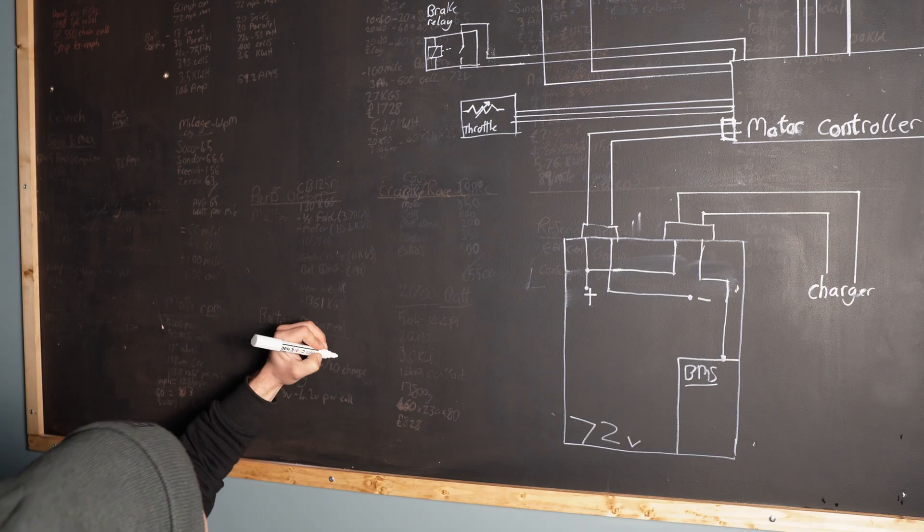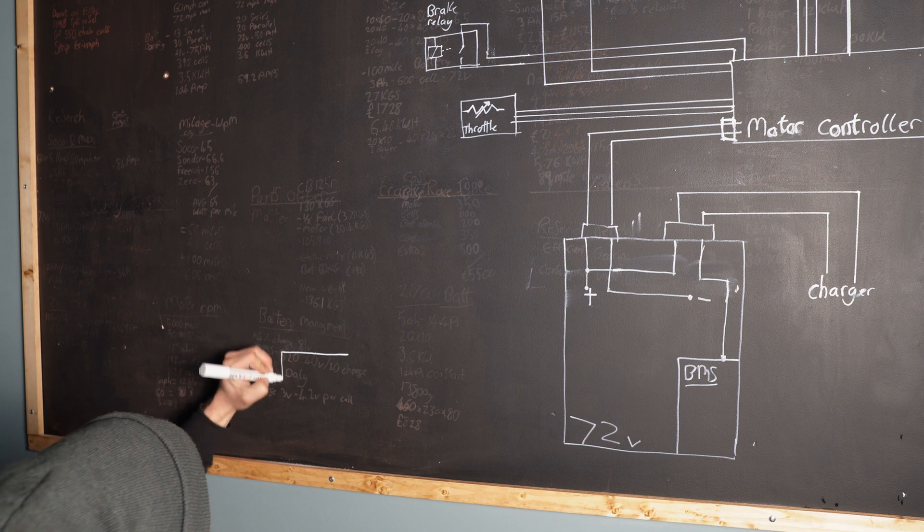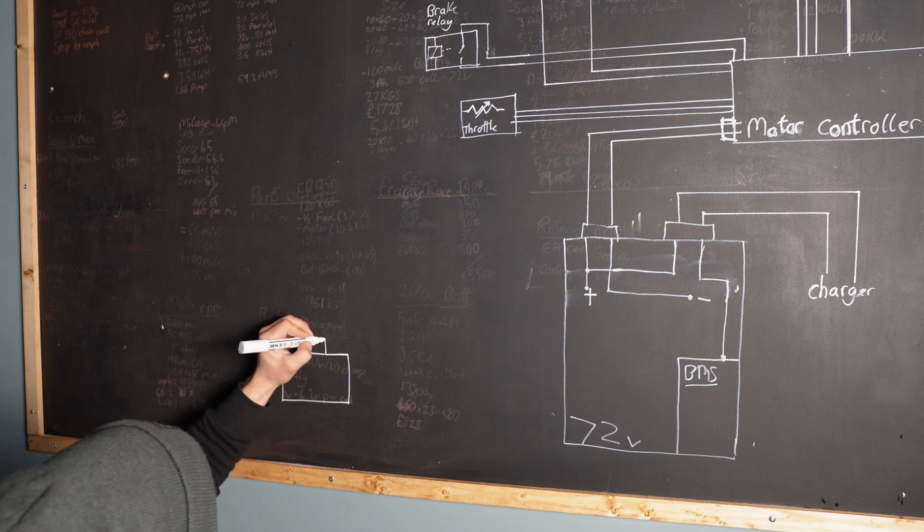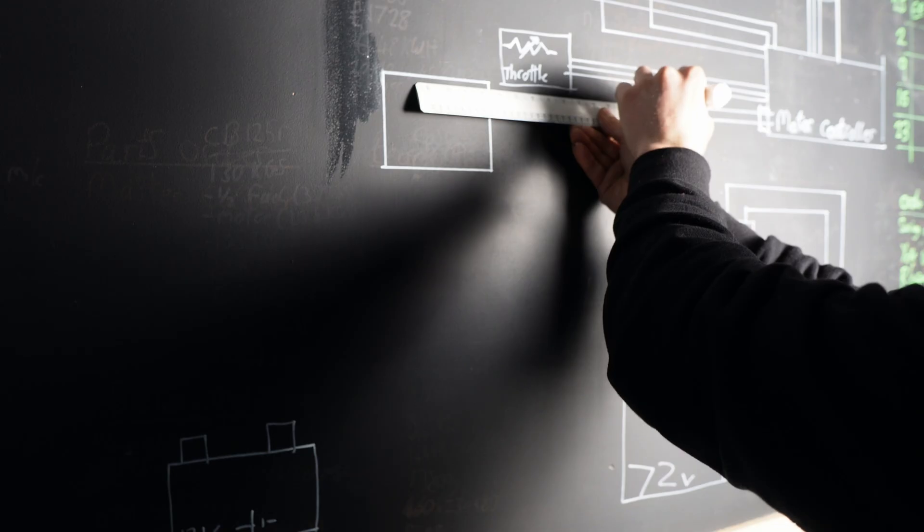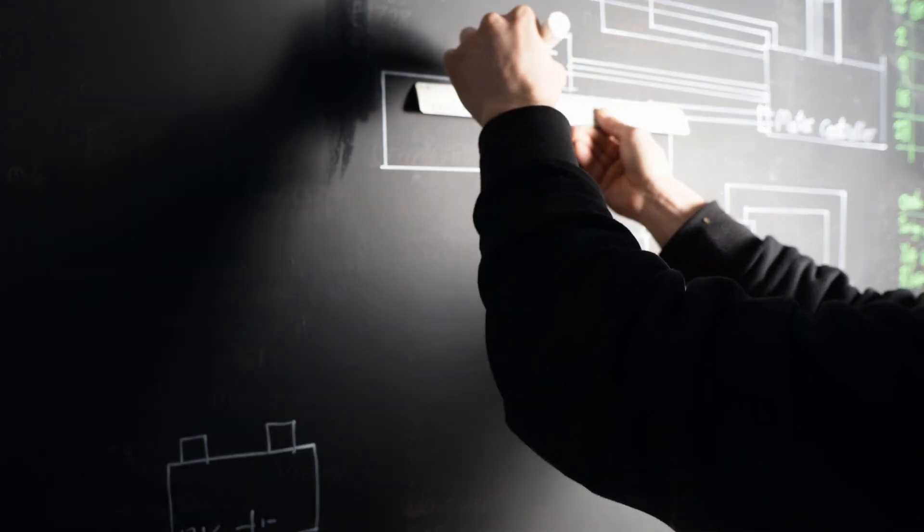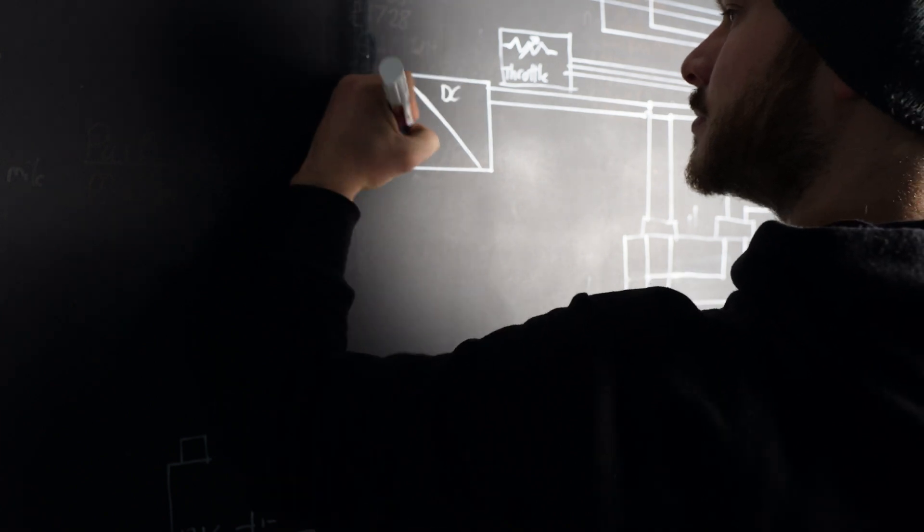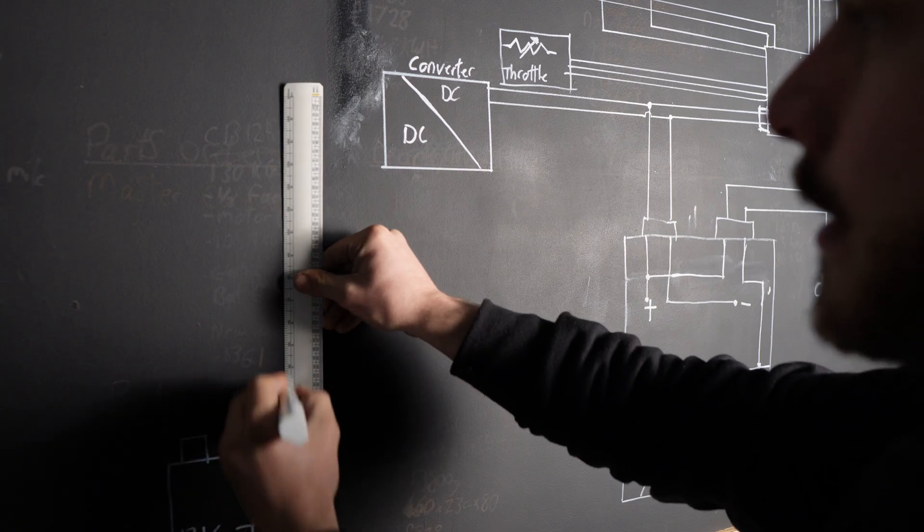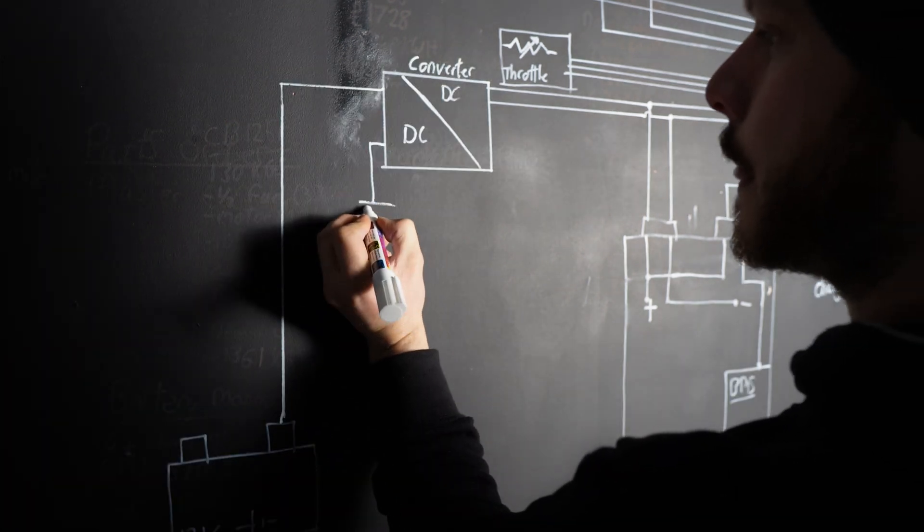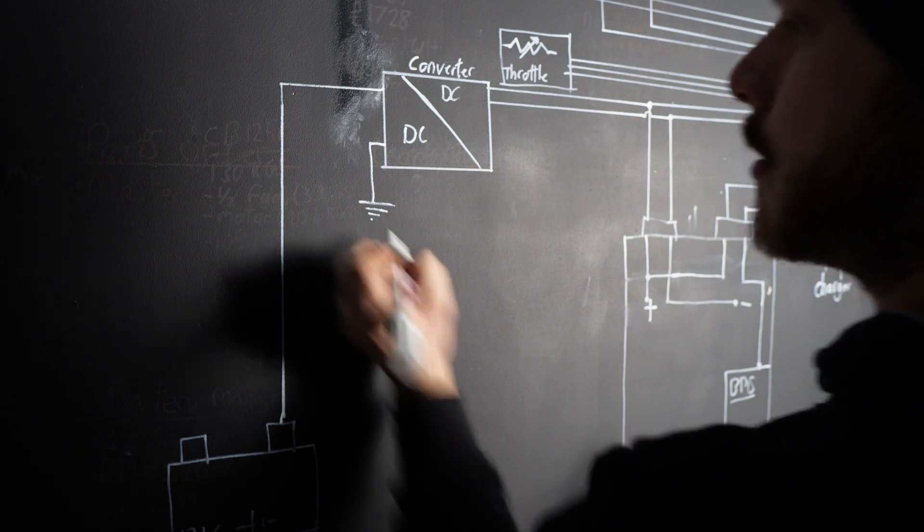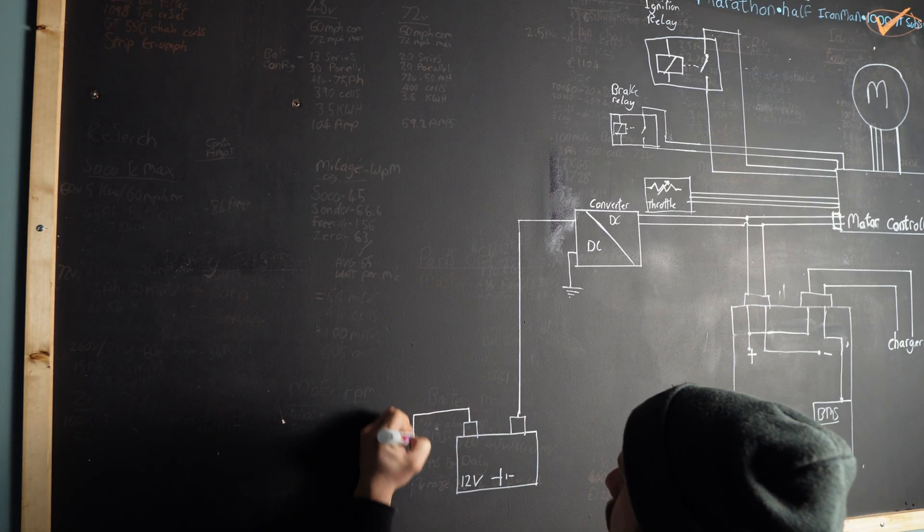Now we can move on to the 12 volt circuit and one of the biggest components we're missing from the electric motorcycle is a generator or alternator which means I have to add a charging circuit because the lights and the dash are all going to draw current from that 12 volt system. I'm going to run a DC to DC step down converter. I'll pick up off the battery controller to feed the converter. The 12 volt output will go directly to the 12 volt battery and I can earth it to the frame and I can also earth the 12 volt battery onto the frame.